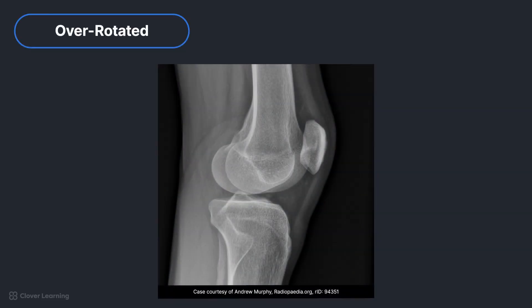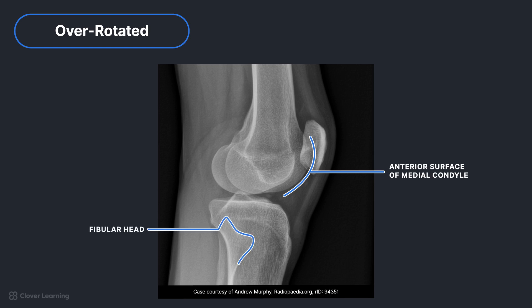In this image, the knee is over-rotated. If we look at the anterior surface of the medial condyle and the fibular head, this time we see the medial condyle is closer to the patella, and the fibular head is almost entirely superimposed by the tibia. This means the knee is too close to the image receptor and must be rotated internally to be in a true lateral.